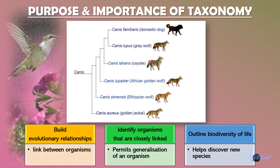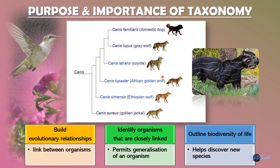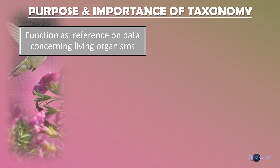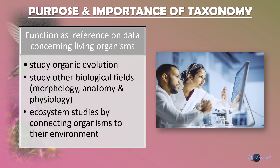This kind of evolutionary relationship also helps scientists outline the biodiversity of life, meaning we can determine what different species exist on this planet. It also provides an opportunity to determine if organisms we find are actually new species or variants of the same species. Finally, taxonomy also provides data on living organisms for other fields of research, such as organic evolution, biological fields such as morphology, anatomy and physiology, as well as ecosystem studies, which help ecologists connect the relationship between organisms and the environment.